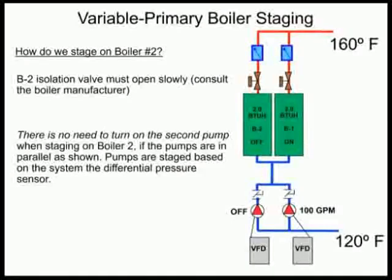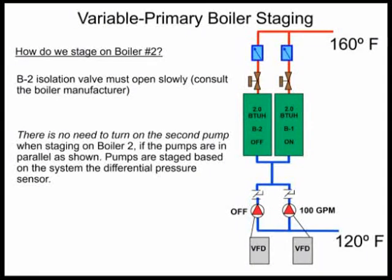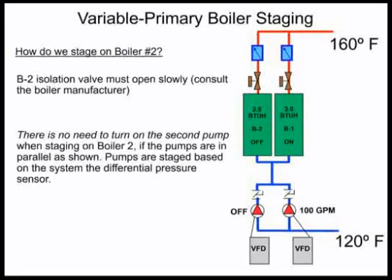Remember, there's no need to turn on that second pump when staging boiler number two. If the pumps are in parallel, one pump can run across both boilers. Keep in mind the pumps aren't staged by the boilers — they're staged on the differential pressure sensor out in the system, either by the built-in VFD controls or by the BMS. Pump staging in variable primary is not based on what the boiler is doing; it's based on what's happening in the system as determined by flow. Those two are independent of each other.